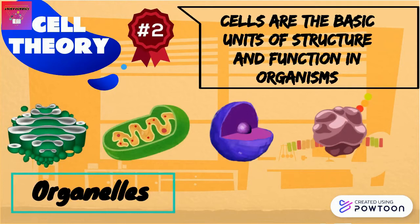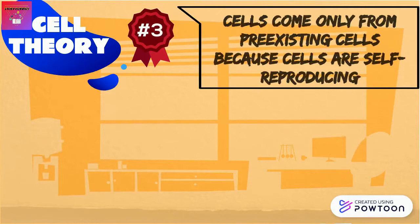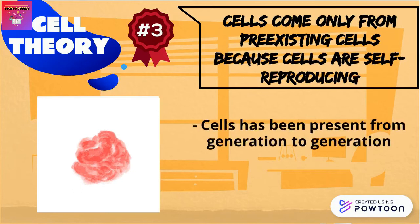The third tenet in cell theory states that cells come only from pre-existing cells, because cells are self-reproducing. This means we can infer that all life on Earth today came from cells in ancient times. In reality, a continuity of cells has been present from generation to generation.